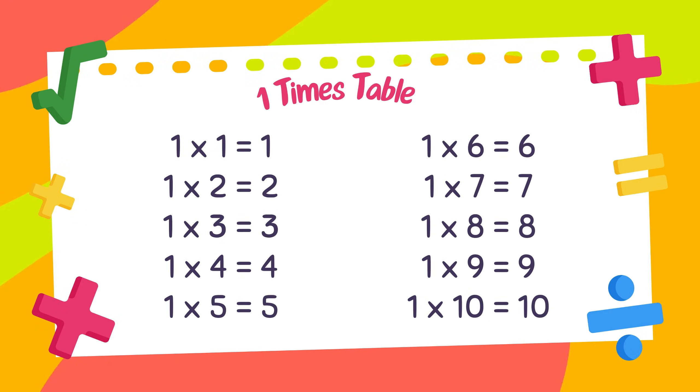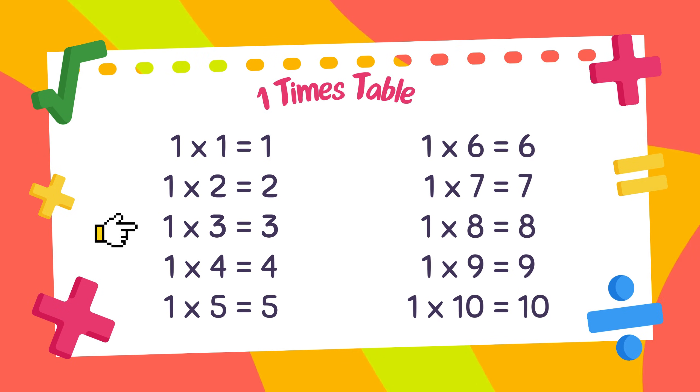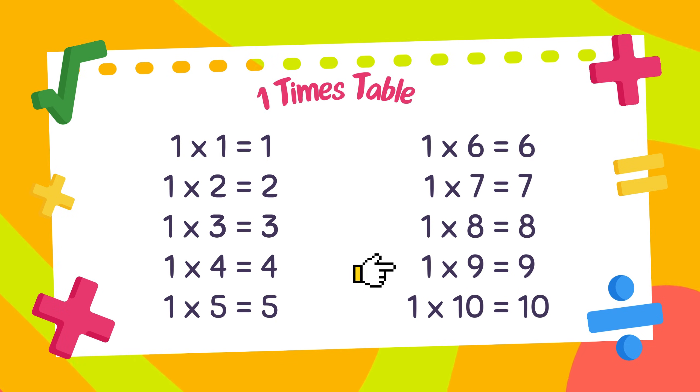And now our one timetable is ready. One times one is equals to one. One times two is equals to two. One times three is equals to three. One times four is equals to four. One times five is equals to five. One times six is equals to six. One times seven is equals to seven. One times eight is equals to eight. One times nine is equals to nine. And one times ten is equals to ten.